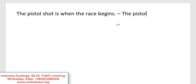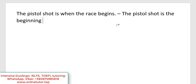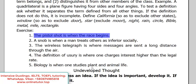The correct version: 'The pistol shot is the beginning of the race.' Or you could rephrase it slightly as 'The pistol shot signifies the beginning of the race.' But that doesn't change the underlying principle. If we have a noun as the subject linked by 'is,' we should also have a noun on the other side.